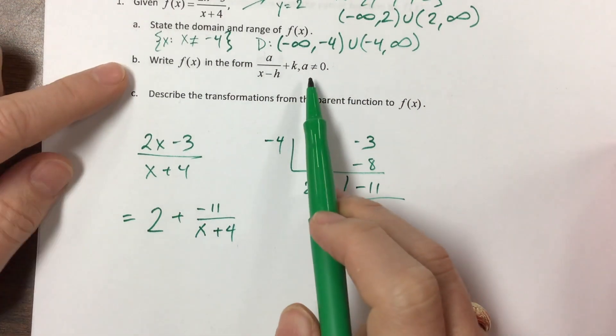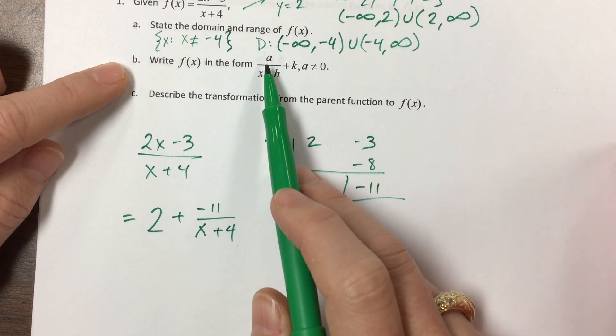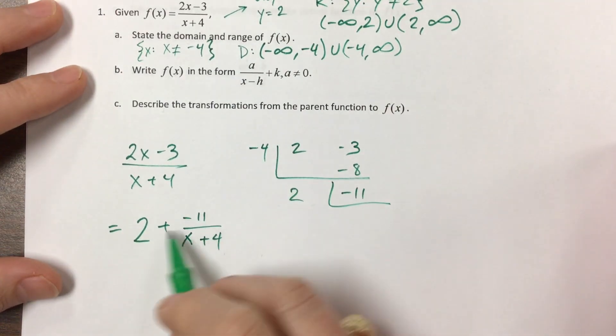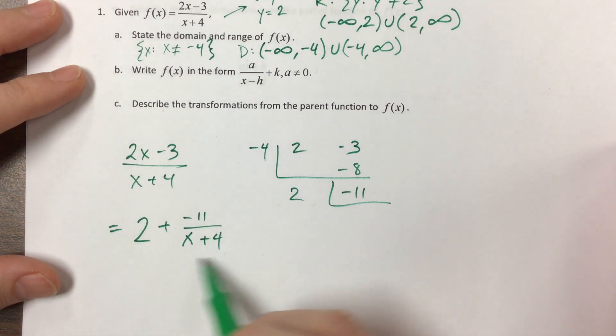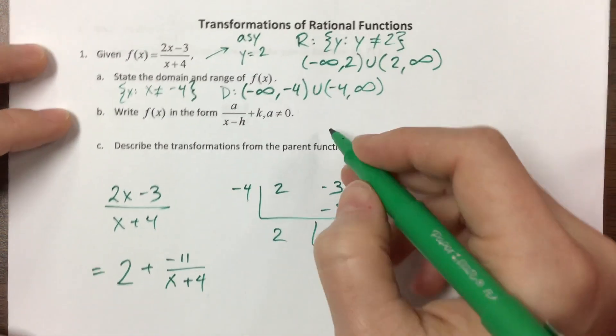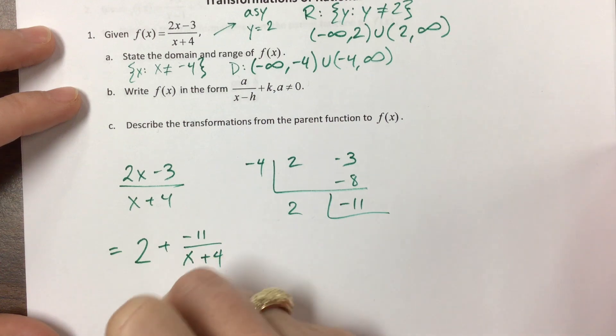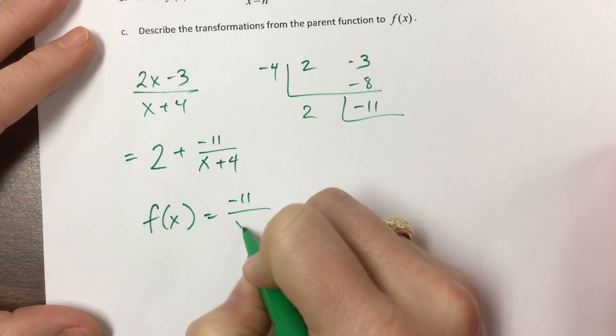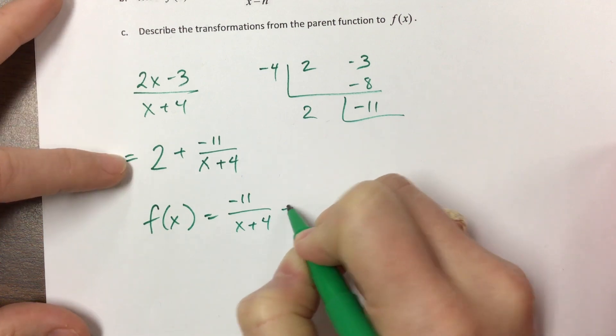Well, we've almost got it in the form that they wanted. They wanted us to write it a over x minus h plus k. Here's the a. This is the h value comes from here, and there's the k. So if we rewrite this, we can say that our f of x is equal to negative 11 over x plus 4 plus 2.